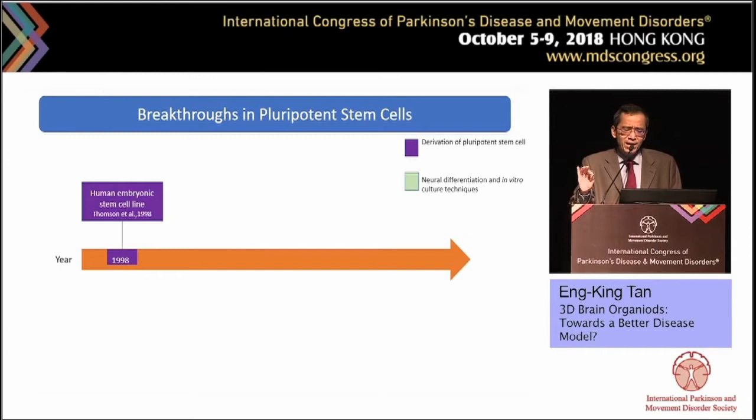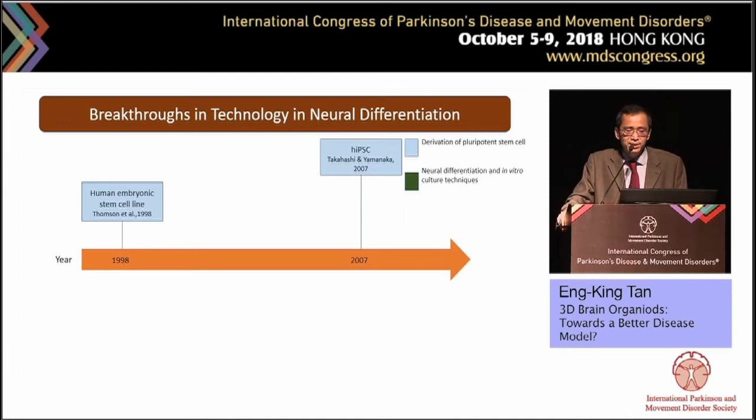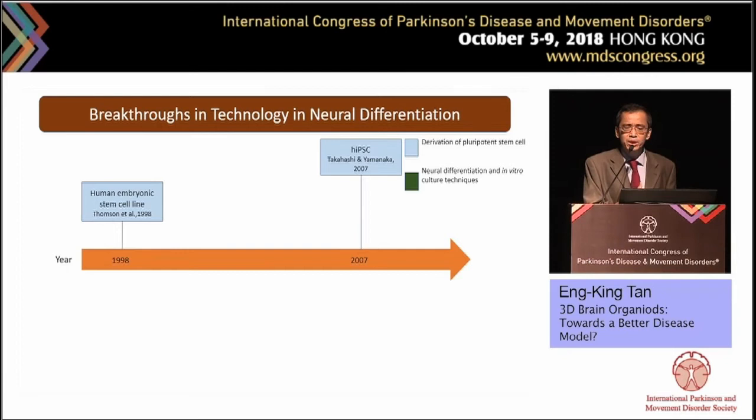The first breakthrough is in pluripotent stem cells. James Thomson in 1998 was first to derive embryonic stem cell lines from human blastocysts. In 2007, Yamanaka and colleagues identified four to five transcriptional factors — now referred to as Yamanaka factors — capable of inducing pluripotent stem cells: stem cells that can differentiate into different lineages and cell types.